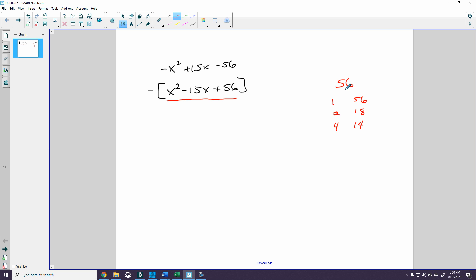How about 6? 6 doesn't go into that. 7, oh wait, 7 goes into that. I have 7 and 8. So I see there's going to be my 15, and since I have to add up to negative 56, it's going to be negative 7 and negative 8.